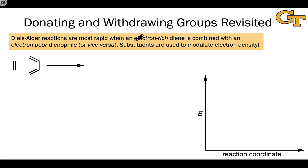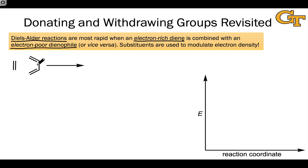For example, when we tack on an electron donating substituent to the diene to make it electron rich, and we tack on an electron withdrawing substituent onto the dienophile to make it electron poor, the rate of the Diels-Alder reaction increases dramatically. Most Diels-Alder reactions involve the combination of dienes and dienophiles with substituents of this type. The parent Diels-Alder reaction between ethylene and butadiene is relatively slow — it needs high temperatures to proceed at an appreciable rate, something like 300 degrees C, and the product is just cyclohexene.